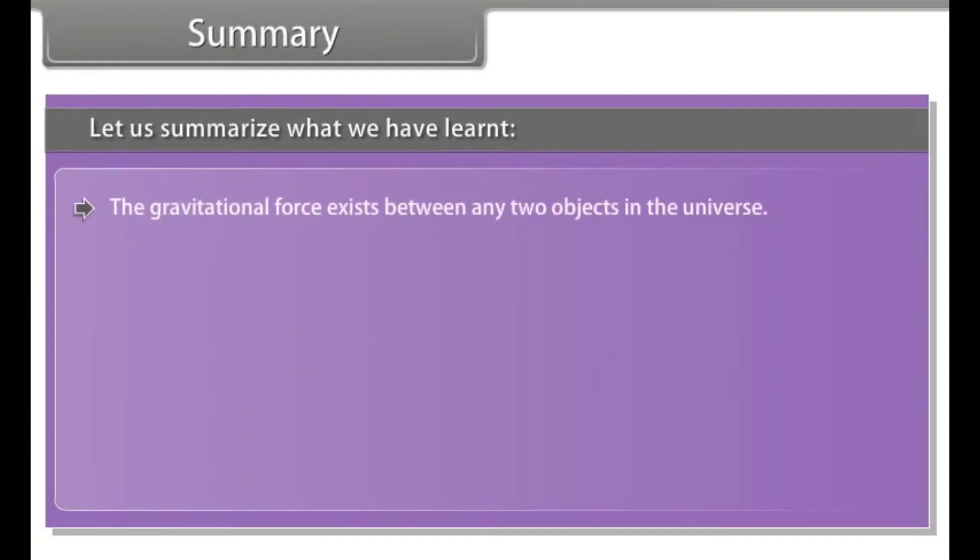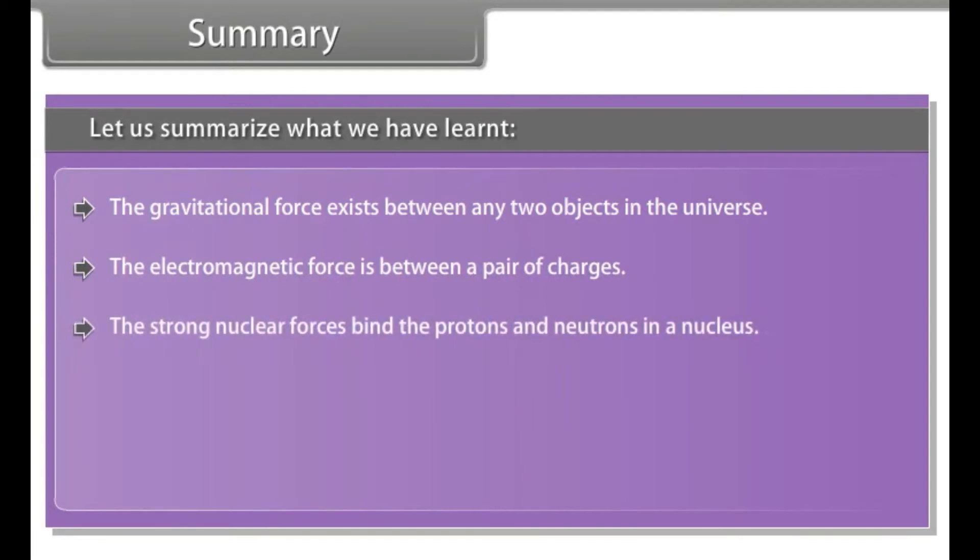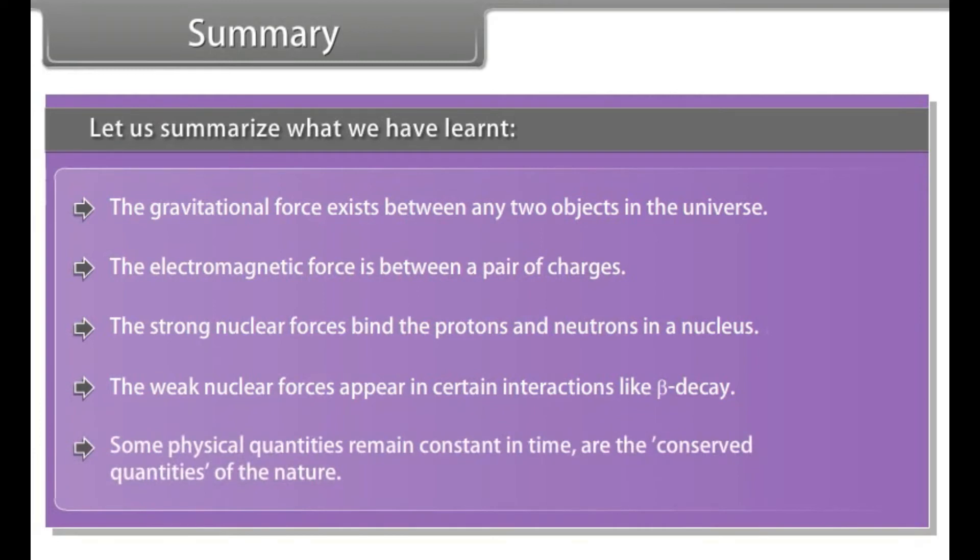The gravitational force exists between any two objects in the universe. The electromagnetic force is between a pair of charges. The strong nuclear forces bind the protons and neutrons in a nucleus. The weak nuclear forces appear in certain interactions like beta decay. Some physical quantities remain constant in time are the conserved quantities of nature.